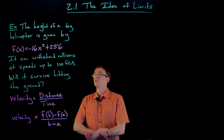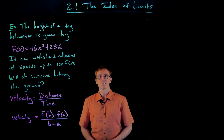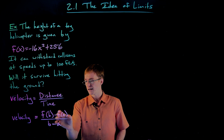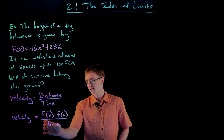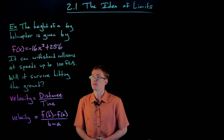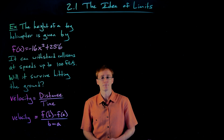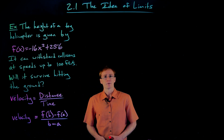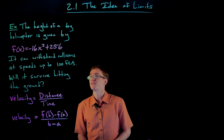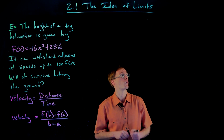So if we want to approximate the speed at which this toy helicopter is falling, we need to know the final distance value, the initial distance value, the final time value, and the initial time value. We can get all this information from our equation f of x. So let's think about our function f of x — it's negative 16x squared plus 256, a concave down quadratic function.